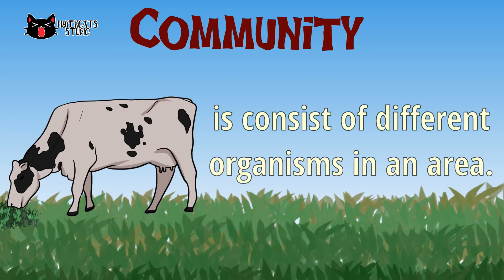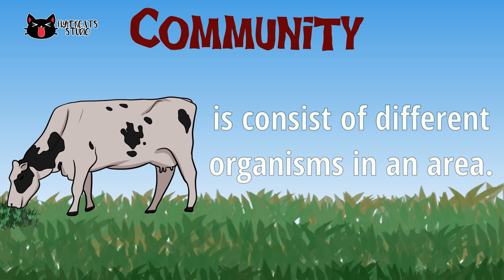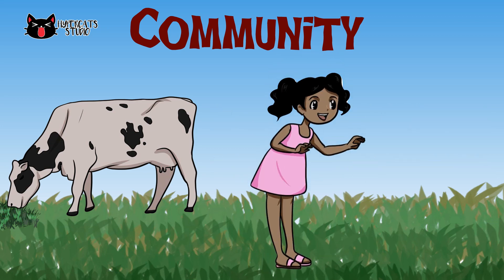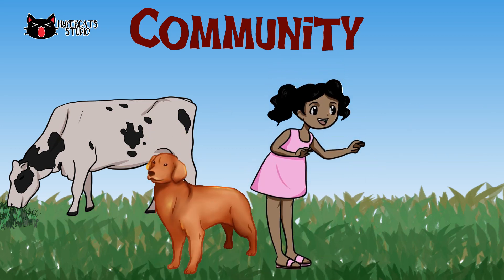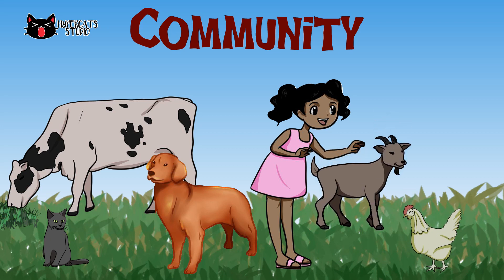A community consists of all the different species within a certain area. For example, when humans live with different animals like dogs, cats, chicken, and goats, they will form a community.